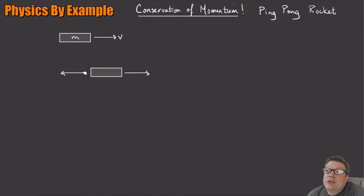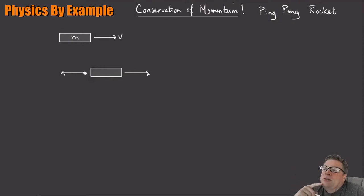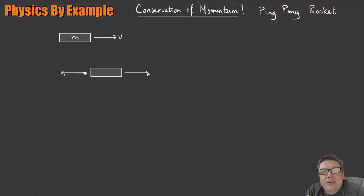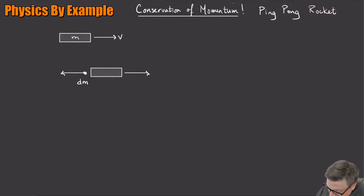Suppose in general — the rocket doesn't have to start from rest, we could be looking at this from some point in time after the rocket's already started. Initially I've got a rocket of mass m moving at speed v. V could be zero, maybe it starts from rest, but in general it could be moving at some speed. Then an instant of time later, a little bit of mass dm — in the calculus sense — comes out the back.